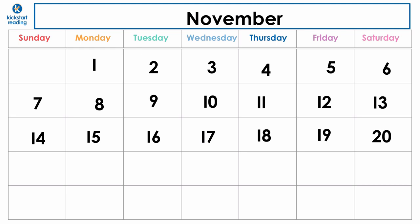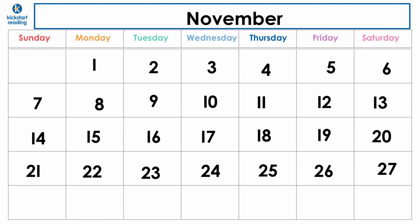We're going to go down to the next row and we're going to write the number 21. 22. 23. 24. 25. 26. 27. You're doing awesome. We're almost at the end.